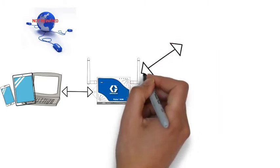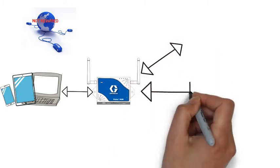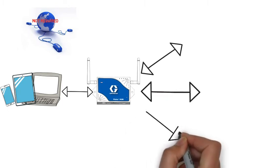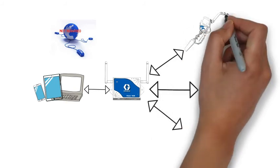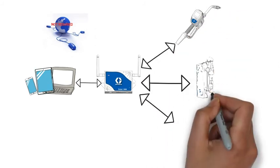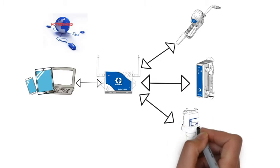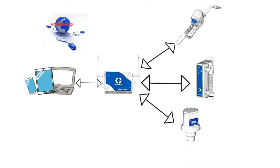The hub talks to the other components of the Pulse System using a custom wireless network that's for Graco hardware only. So whether it's the meter, the pump air control, or the tank level monitor, the Pulse System components are able to communicate.